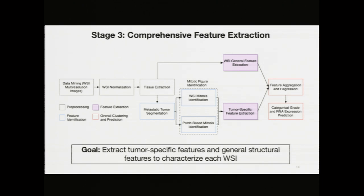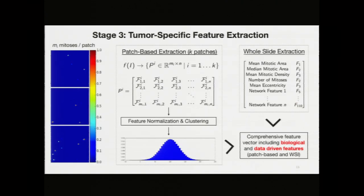After identifying where the mitoses and tumors were, we were ready to perform general feature extraction and overall classification of the images. My comprehensive feature extraction methods extracted both tumor-specific and general structural features to characterize the entire whole slide images on a level far more detailed than pathologists can with their mitotic count features. For the patch-based method, patches were extracted for K different mitotic figures, and each patch was encoded into a feature vector of length 200.